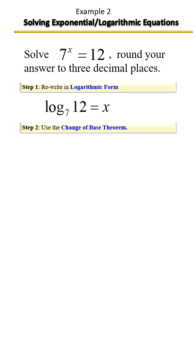So if I'm doing common log, it will be log 12 divided by log 7. If I'm using the natural log, it will be ln 12 divided by ln 7.